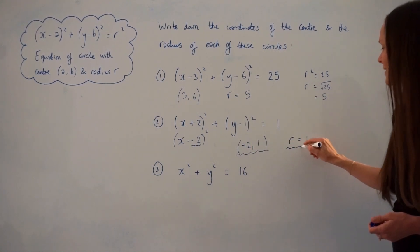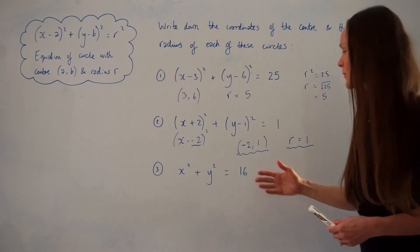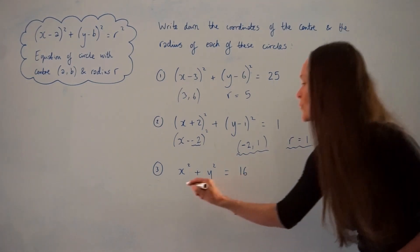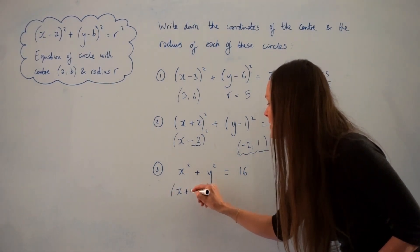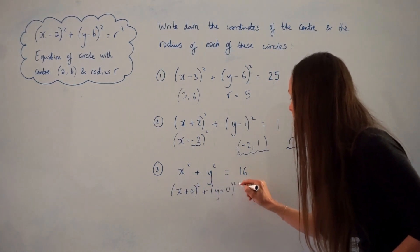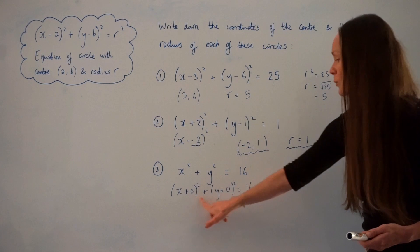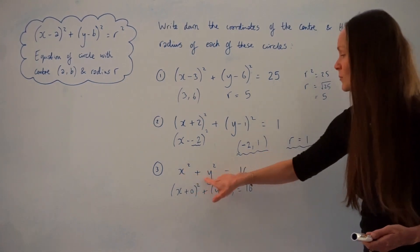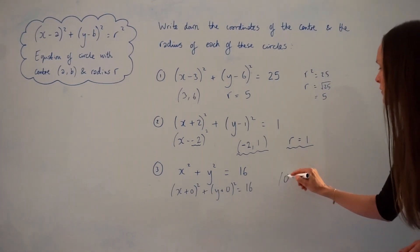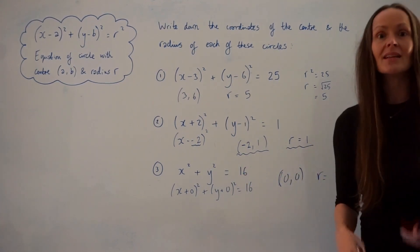In number 3, it says x squared plus y squared equals 16. This time there's no bracket, but it's still in completed square form — it's just like having x plus 0 all squared plus y plus 0 all squared. Now you should be able to see that the x and y-coordinate of the centre would just be 0. Whenever you see x squared plus y squared, you know the centre is at the origin. So the centre is (0, 0) and the radius is the square root of 16, which is 4.